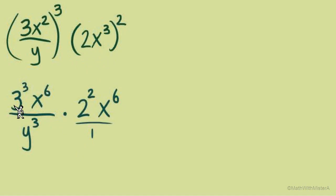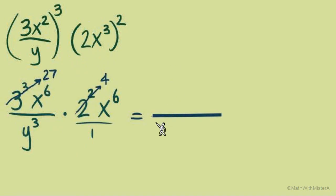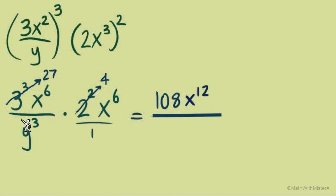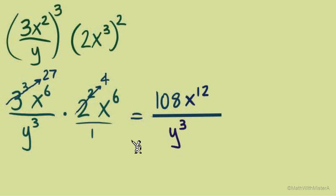Let's proceed and deal with the numbers. 3 to the third is 27, and 2 to the second is 4. Multiplying those together gives 108. For the variables: x to the sixth and x to the sixth combine to give x to the twelfth. In the denominator, we have y to the third — when the coefficient is 1, we usually don't write it. So our final answer is 108 x to the twelfth over y to the third.